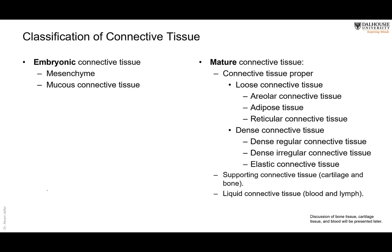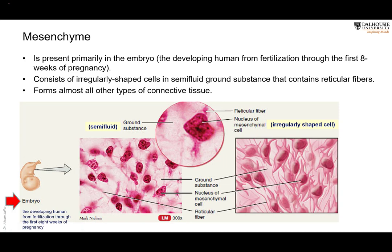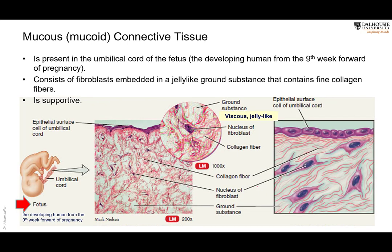Connective tissue can be classified as embryonic or mature. Of the mature type, there is blood and lymph, cartilage and bone — which we won't study now — and connective tissue proper. The embryonic type includes mesenchyme, which is the origin of all connective tissue. It arises from mesenchymal cells present in the embryo during the first eight weeks of development, with reticular fibers and a semi-fluid ground substance.